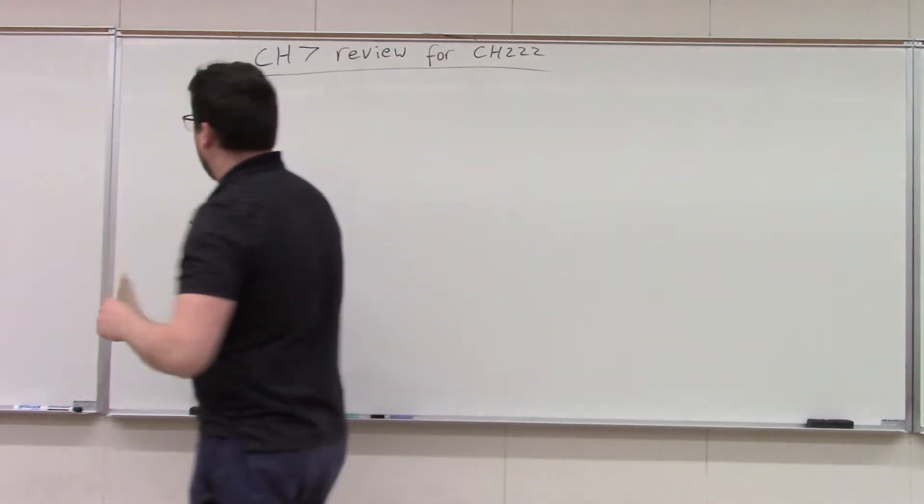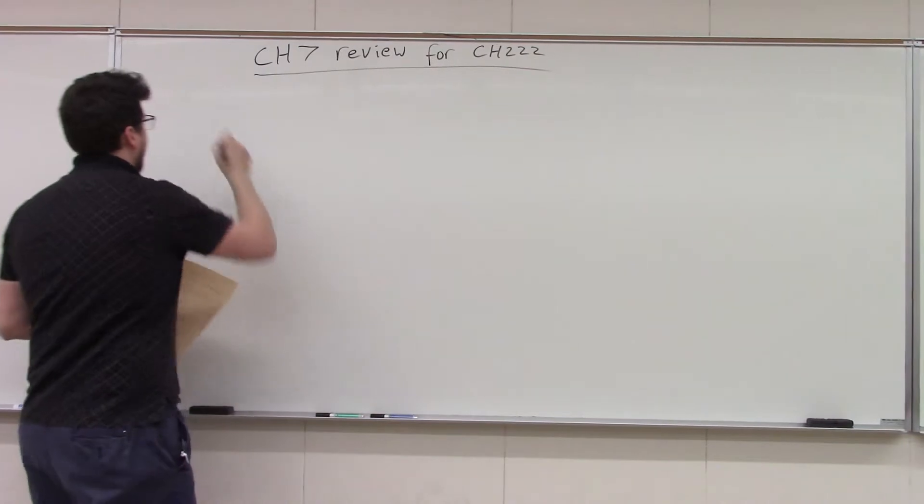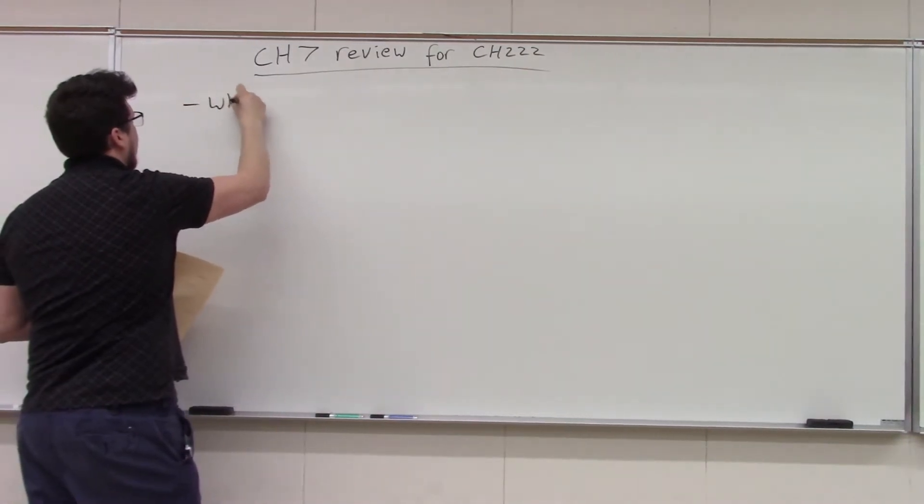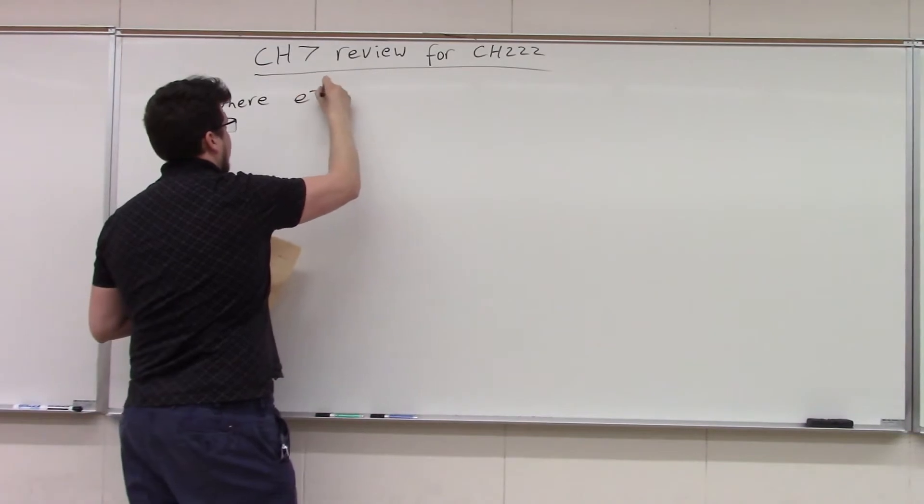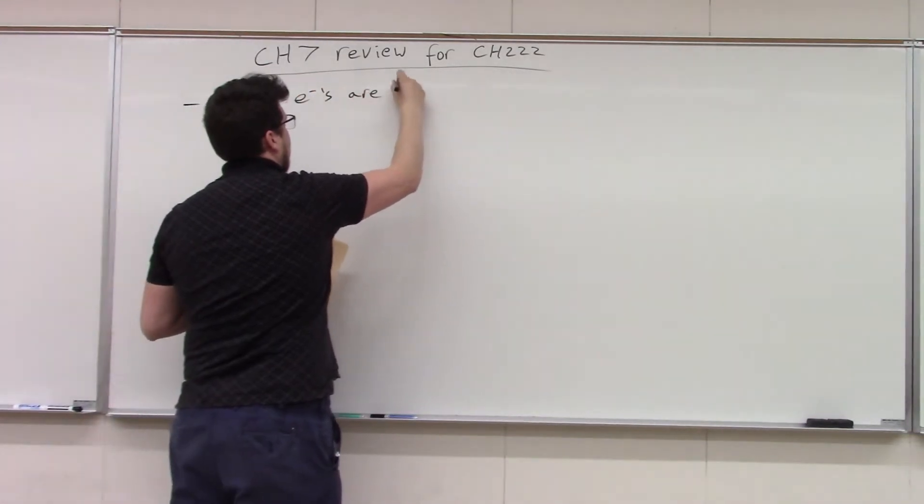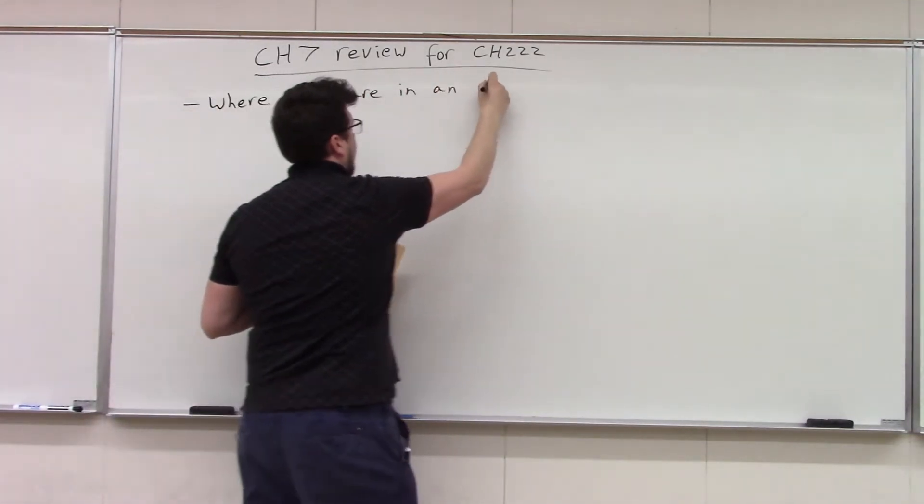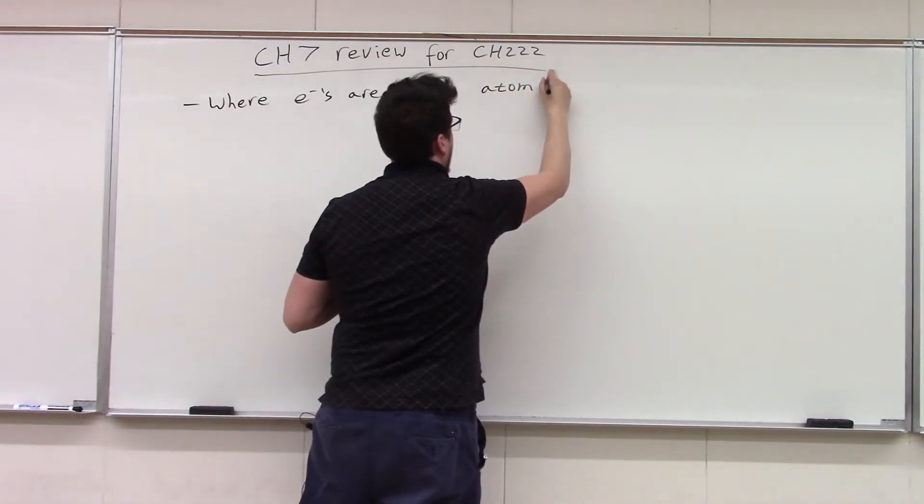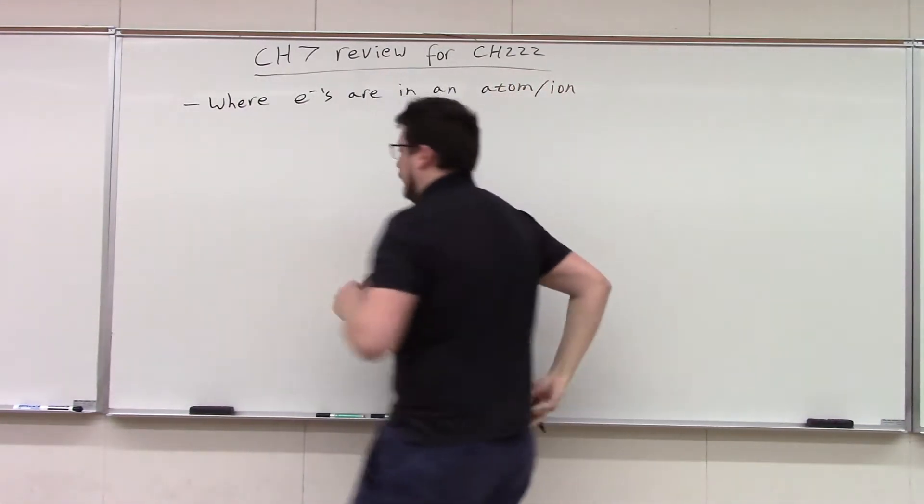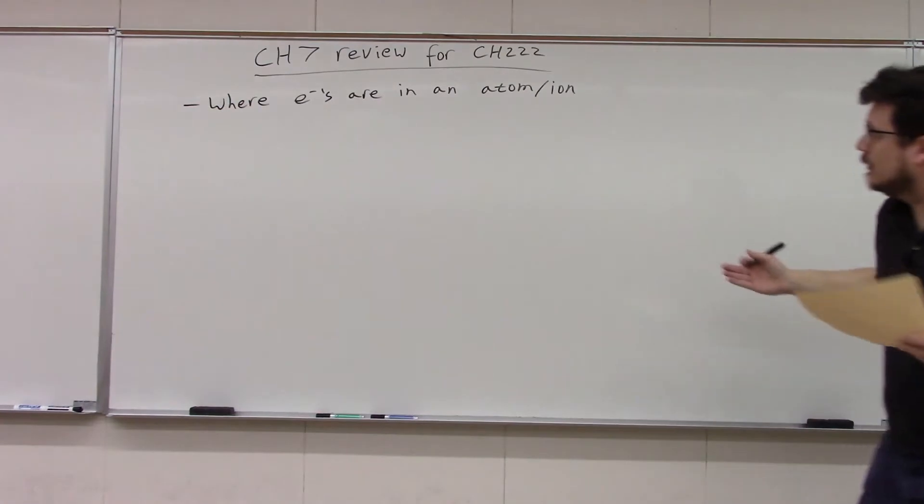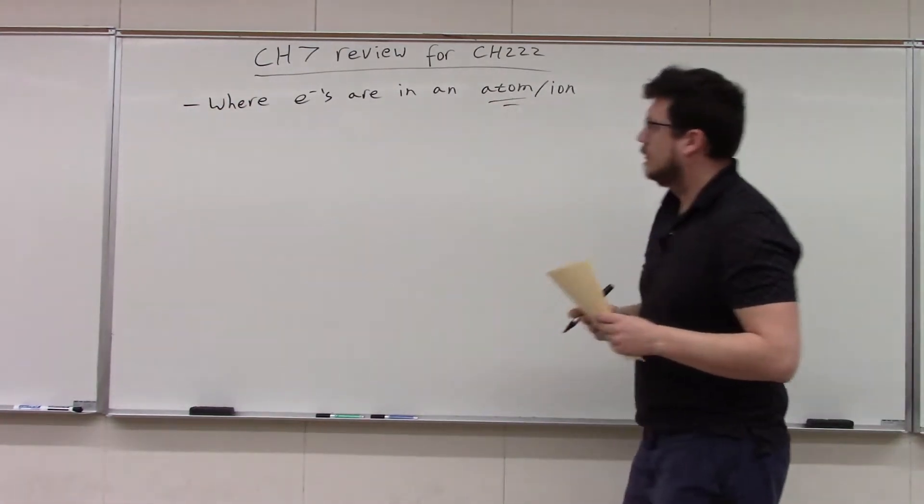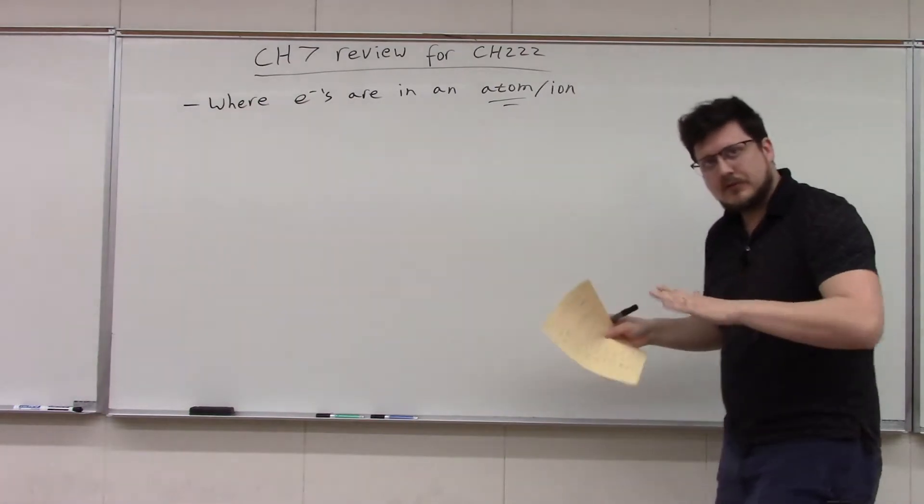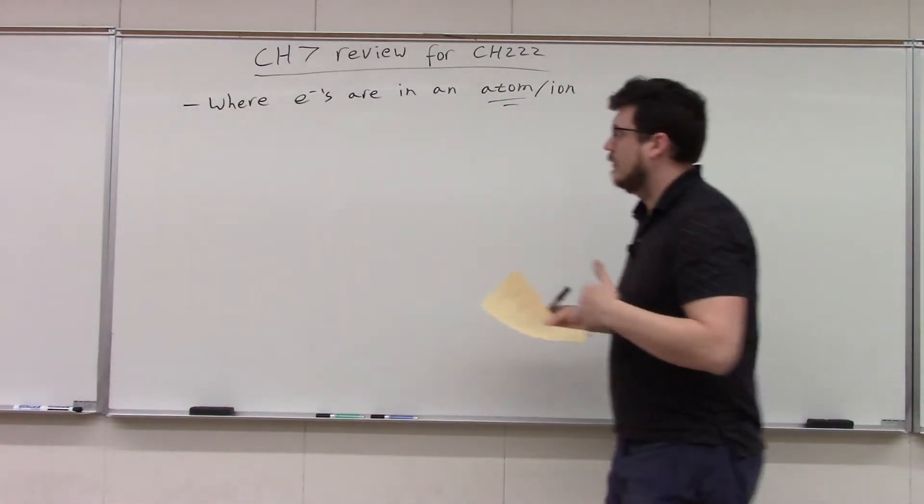Chapter 7. The key thing is, when we were talking about Chapter 7, we were going, okay, where the electrons are in an atom, and then we took it to the next level, and we also brought ions into play. Either one of those, where they were in an atom or ion. Now, this is going to be the key thing right here, because when we get to Chapter 8, this is what we're going to be using.